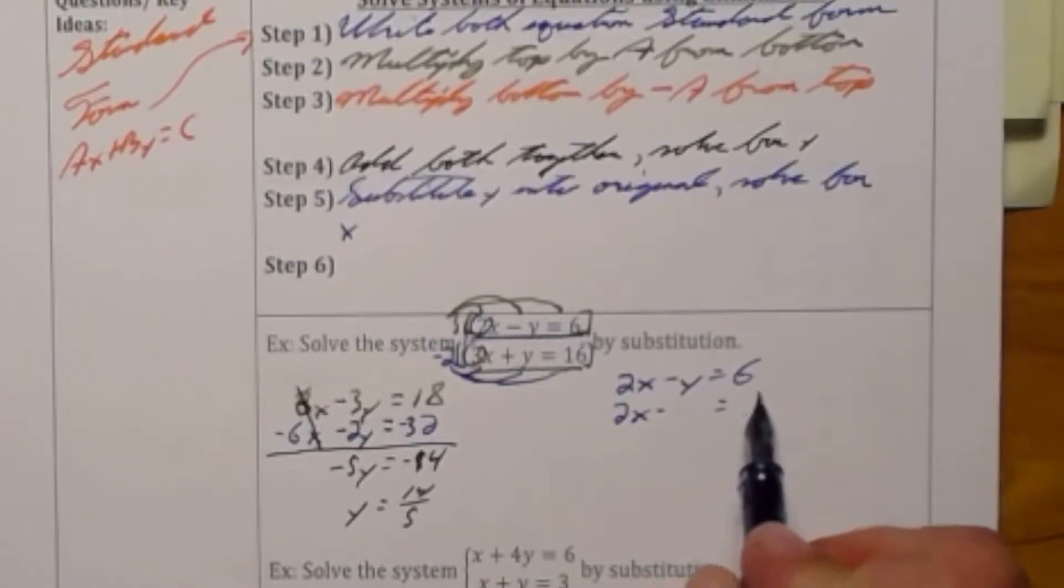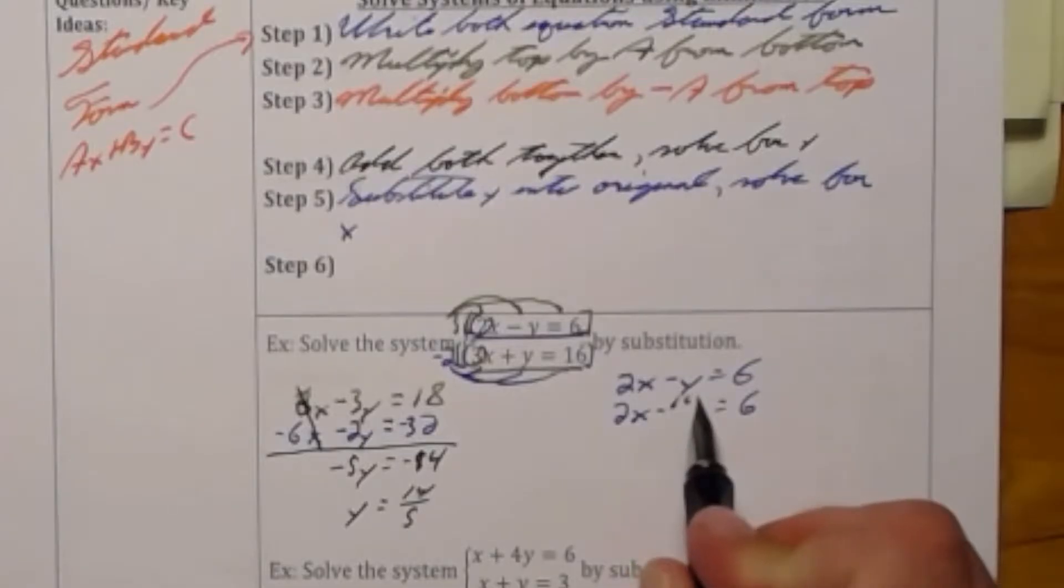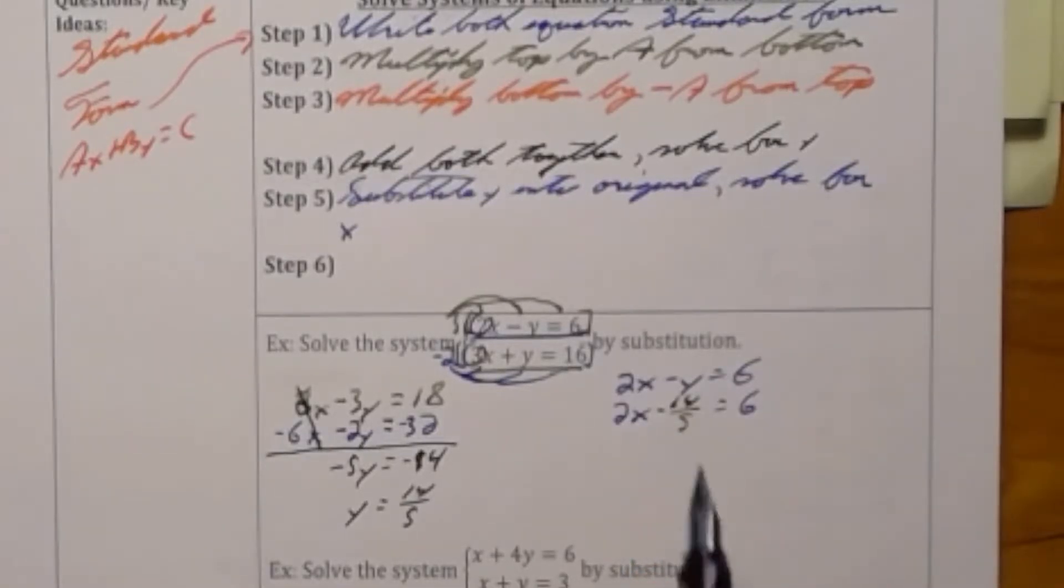Now to remember how we get rid of fractions I'm going to multiply the entire equation by that denominator. This is going to give me a new equation of 10x minus 14 is equal to 30.